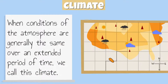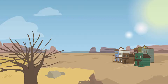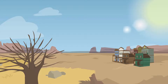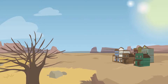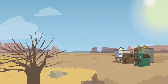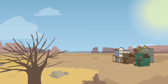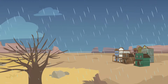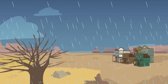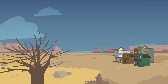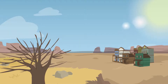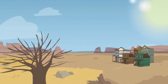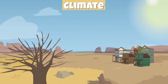Climate is the average weather over an extended period of time in a region. For example, the atmospheric conditions of a desert are dry and hot for very long periods of time. Even if it were to rain or snow a few times a year, the dry hot weather always returns. We would call this the region's climate.